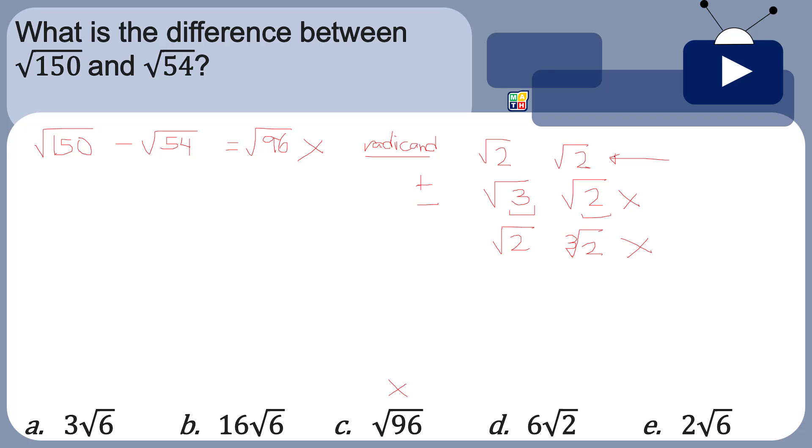So what would be the correct answer here? We are going to simplify them. How do we simplify? Yes, 150 and 54 are not perfect squares but they can be factored. We can find a factor that is a perfect square.